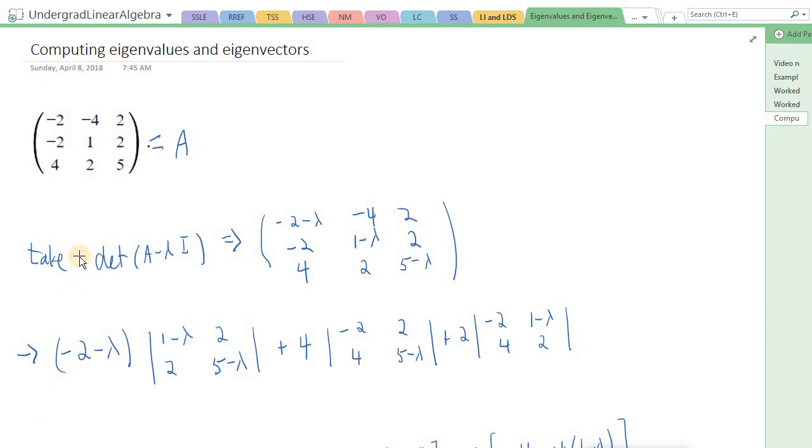Okay, here's an example of computing eigenvalues and eigenvectors for a 3 by 3 matrix.